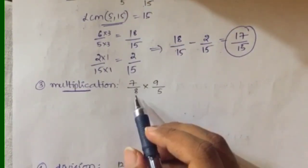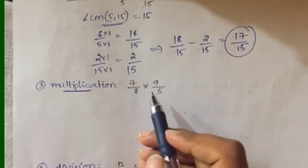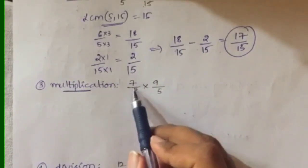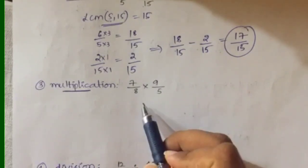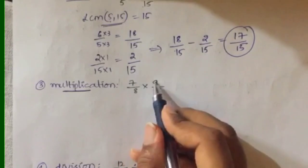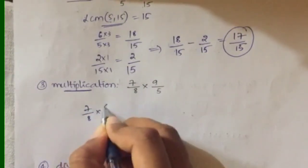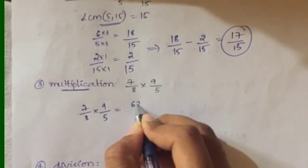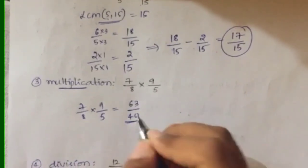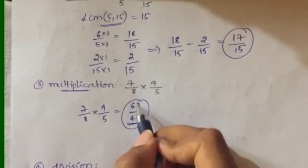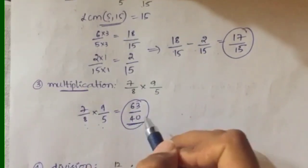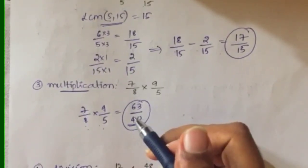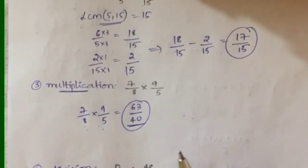Next is multiplication. For multiplication, there is nothing mandatory about checking whether denominators are the same. You can directly multiply numerator with numerator and denominator with denominator. So for 7/8 × 9/5, multiply 7 × 9 = 63 and 8 × 5 = 40, giving 63/40. Multiplication is very simple — just multiply the numerators together and the denominators together. If you can simplify the result, you may do so.